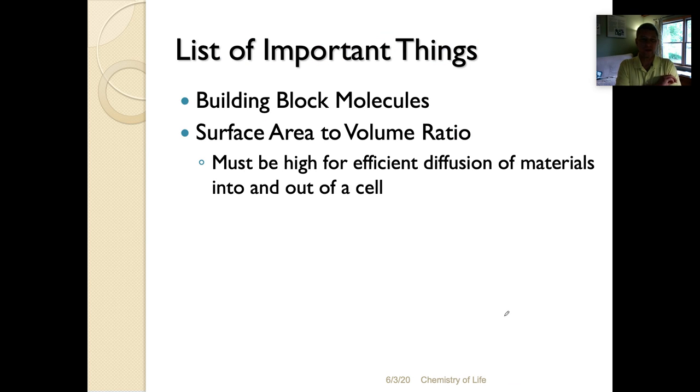Now in the last video I talked about the list of important things that was going to be very important for your final exam, and here I'm going to add a second item to the list of important things, and that's going to be the surface area to volume ratio aspect. We talked in chapter two about the building block molecules. In chapter three here we're talking about the idea of surface area to volume ratio. And of course, as we've already stated, it has to be high for efficient diffusion of materials into and out of a cell, and that generally means that a cell has to be small in size. The smaller the cell is, the better the surface area to volume ratio is.